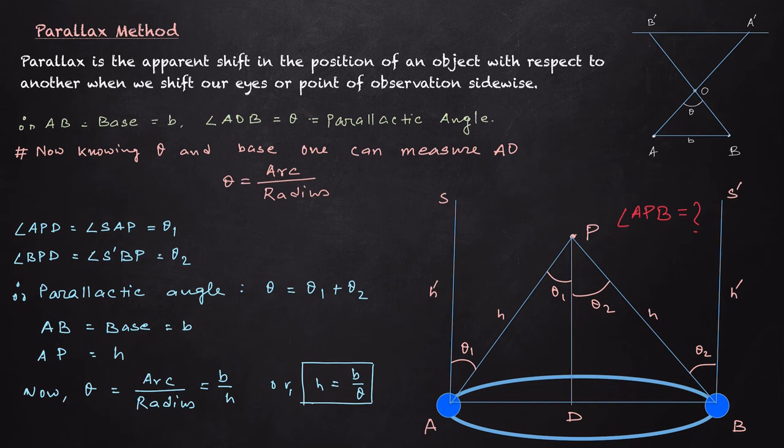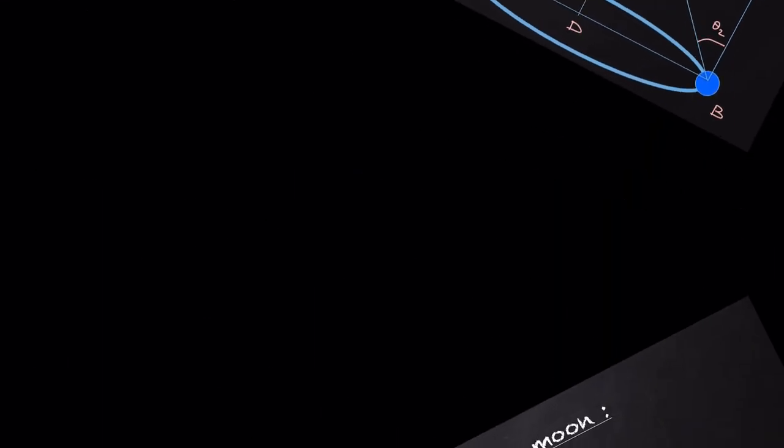Using this formula, we can determine the distance of the star from Earth. This is the parallax method. Also, using this method, one can measure the diameter of the moon.